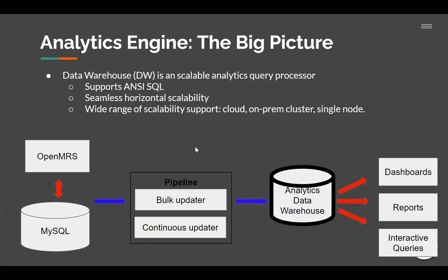The data warehouse has some specifications, but the actual underlying engine can have different choices. We definitely want to support SQL, so whatever data warehouse that we pick, we want that to support standard SQL. The second important factor is that we want it to be horizontally scalable such that performance becomes no issue if people can afford more nodes. But at the same time, we want to support a wide range of scalability setups, from cloud on one end to a single node on the other side of the spectrum. And of course we want to support local clusters as well — so if people have a Spark cluster, for example, we want to have at least one solution that can work on that setup.